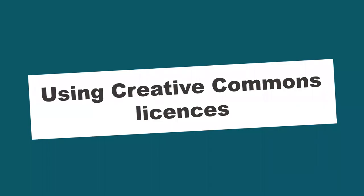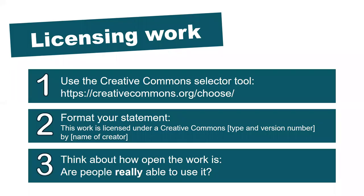So how do you actually use Creative Commons licenses? Adding a Creative Commons license to your work is a simple process. A selector tool is available online which will ask you a few questions about what you want people to be able to do with your work and produce the correct license for you. Once you know which license you want, you can add a statement and/or a graphic to your work to let potential users know which permissions you're granting.